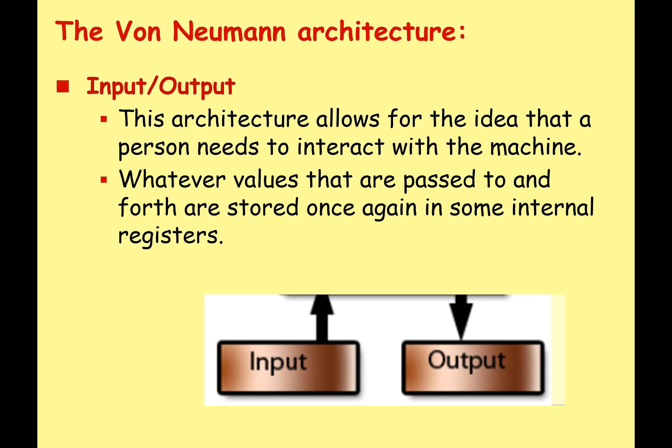We've got input and output. Some people forget about this when looking at von Neumann architecture. We need a way for a person to interact with the machine — a way of putting values into the machine (input) and ways of getting values out of the machine (output).